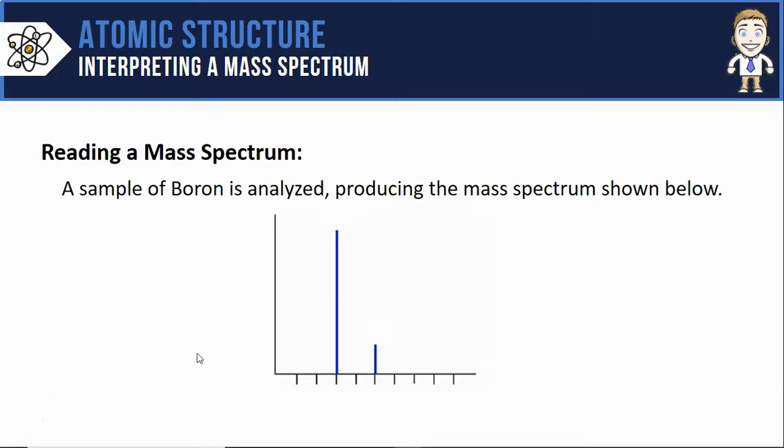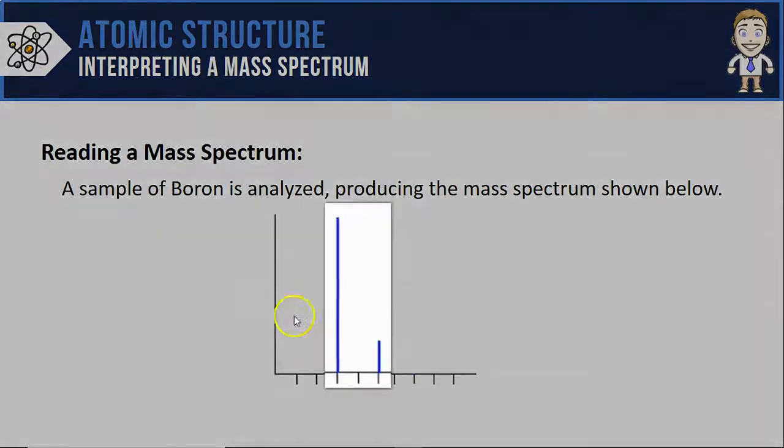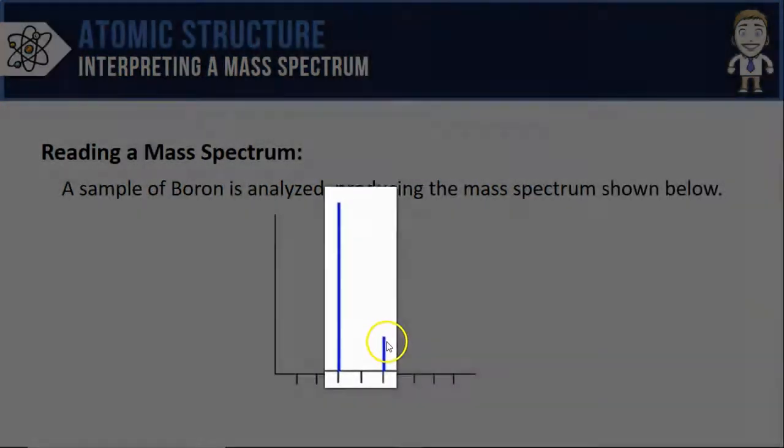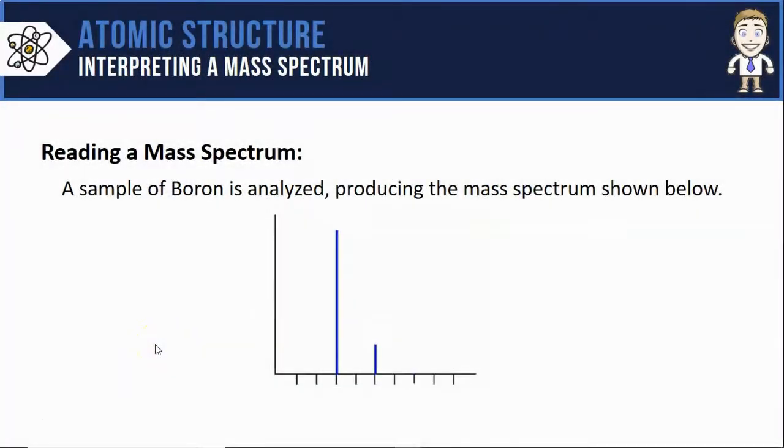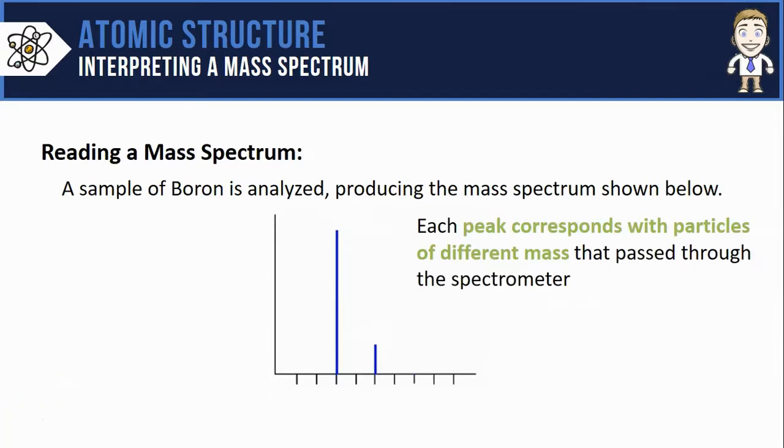The first thing you'll notice on this and any other mass spectrum is the presence of these vertical lines. We generally will refer to these vertical lines as peaks. And each of those peaks simply corresponds to particles of different mass that got passed through and separated by the mass spectrometer.